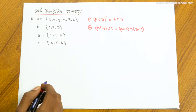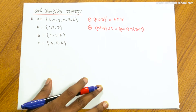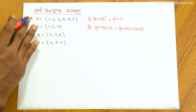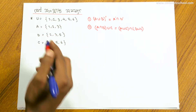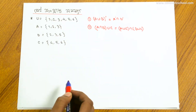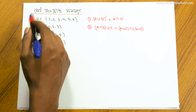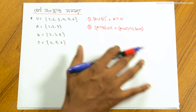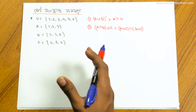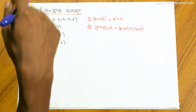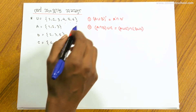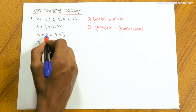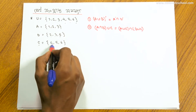We are given the universal set and functions. The universal set U = {1, 2, 3, 4, 5, 6, 7}. Set A = {1, 2, 3, 4}, Set B = {1, 2, 3, 5}, and Set C = {1, 7, 4, 5, 6}. Now we will work with these sets to verify set identities.